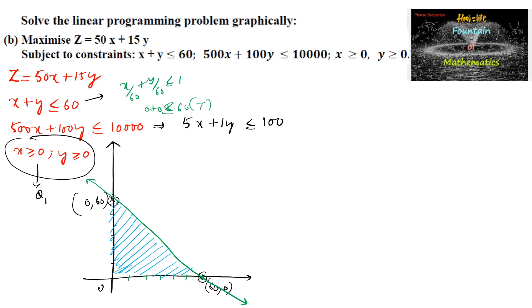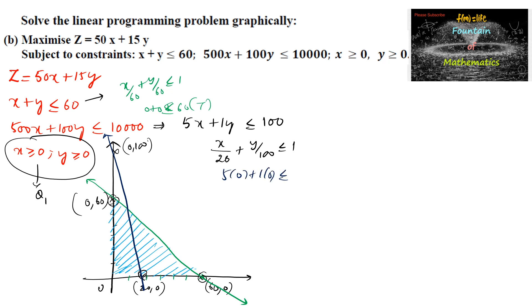For the second inequality, we can write x/20 + y/100 ≤ 1. So the x-intercept is (20, 0) and the y-intercept is (0, 100). We draw the line through these two points. Testing the origin: 5(0) + 1(0) = 0 ≤ 100, which is satisfied, so the solution region is towards the origin.